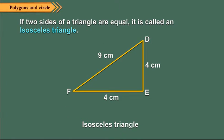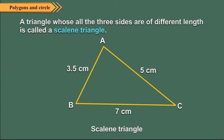If two sides of a triangle are equal, it is called an isosceles triangle. In the figure, DE is equal to EF, so triangle DEF is an isosceles triangle. A triangle whose all three sides are of different length is called a scalene triangle. In triangle ABC, AB is equal to 3.5 cm, BC is equal to 7 cm, and AC is equal to 5 cm, so ABC is a scalene triangle.